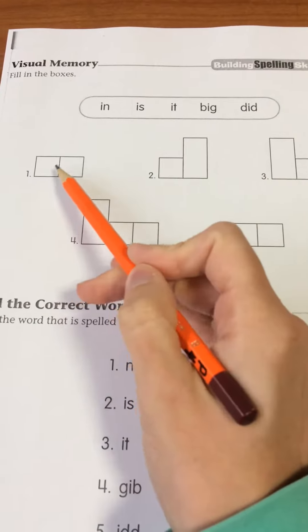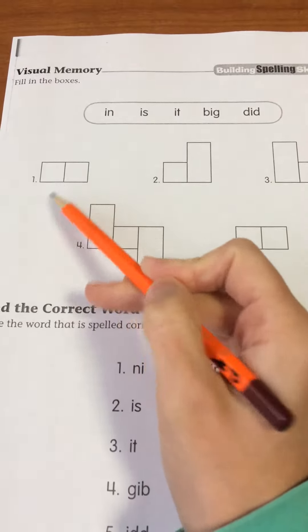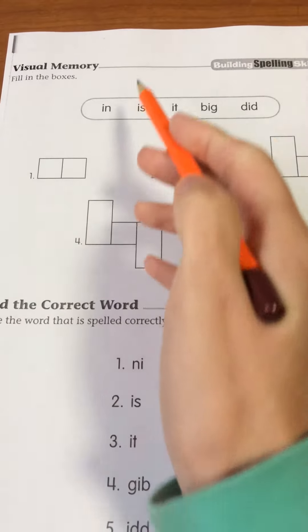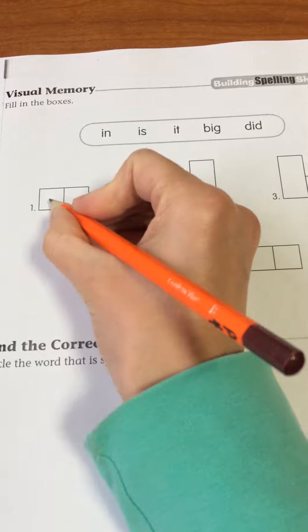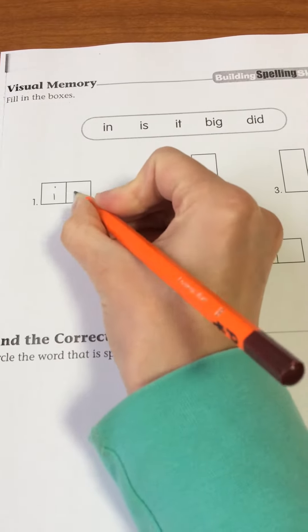Now, box number one is two small boxes, so we have two choices. We can do in or is. Either one's okay. I'll just do the first one because it's the first one there.